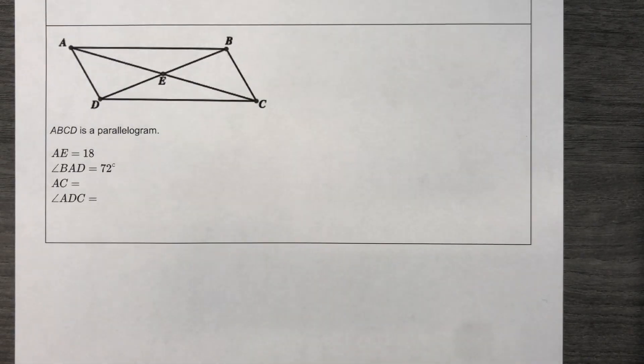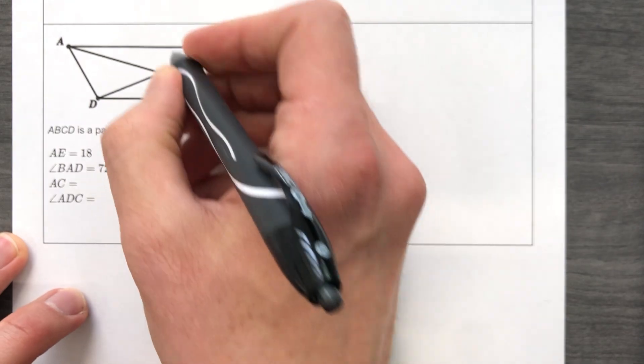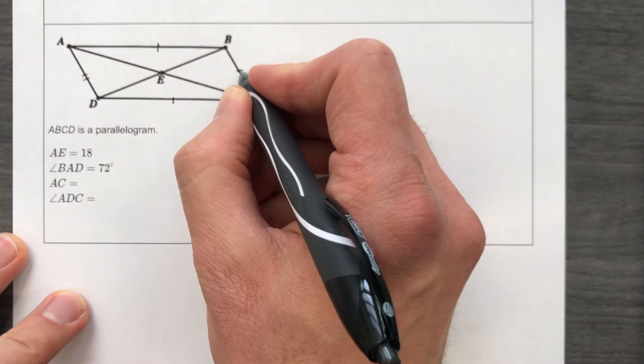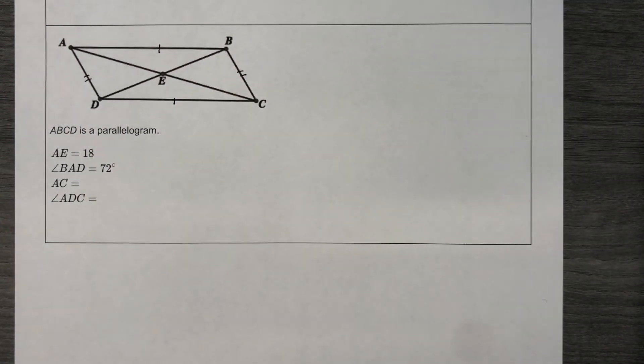All righty. A, B, C, D is a parallelogram. What does that mean? It means that this is congruent to that. This is congruent to that. We also know lots of other things.